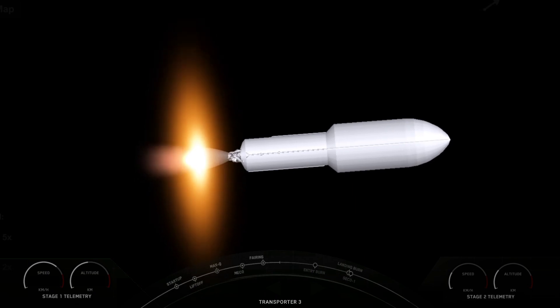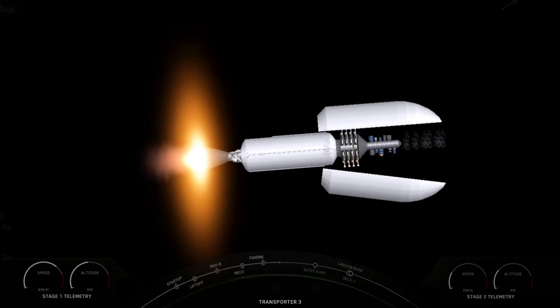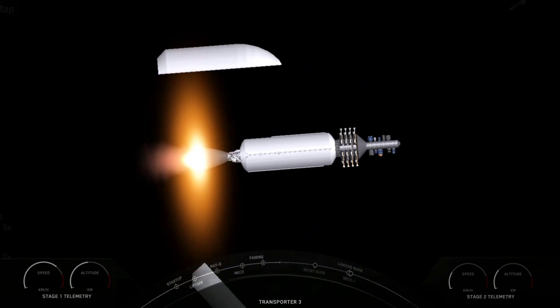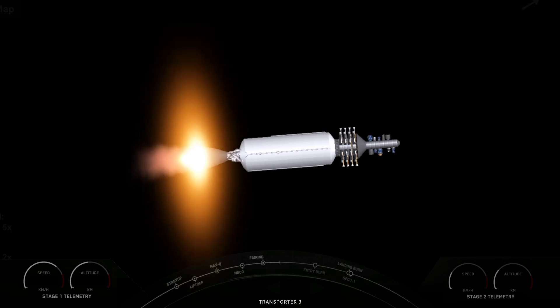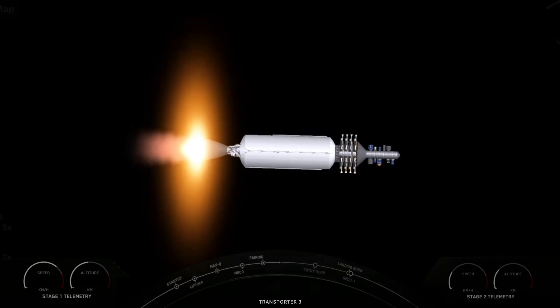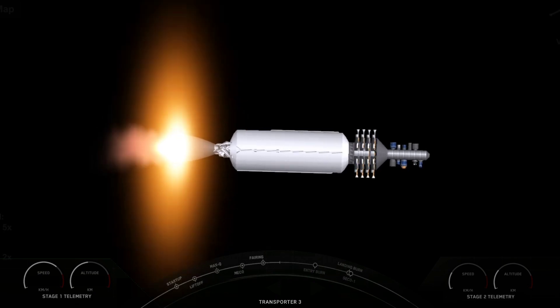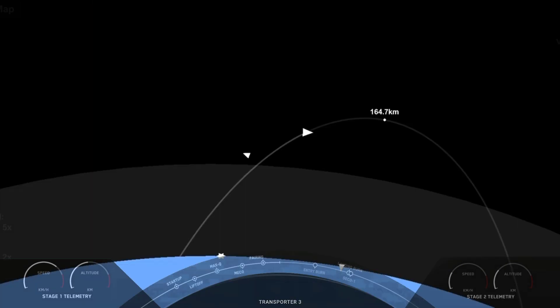The next event we have coming up is fairing deployment. All right, there you can see the two fairing halves have separated, fallen away from the vehicle, exposing the 105 spacecraft to the vacuum of space. As a reminder, we will be attempting to recover these brand new fairing halves once they make their way back to Earth.